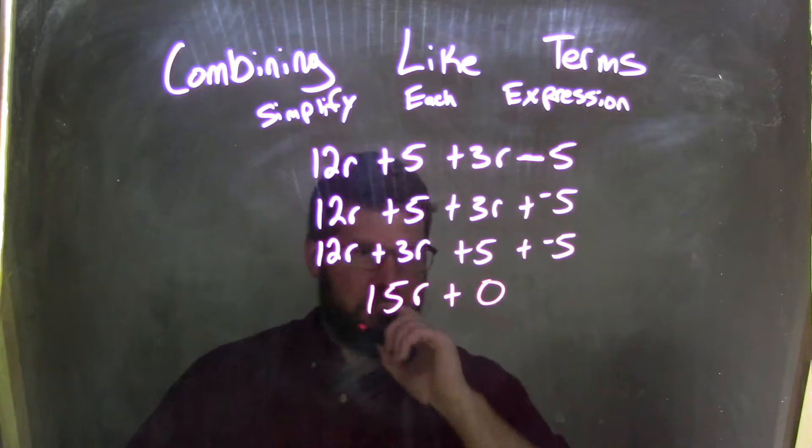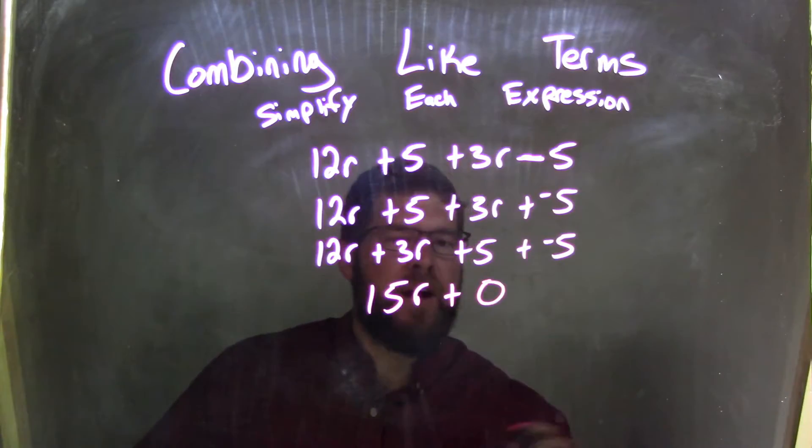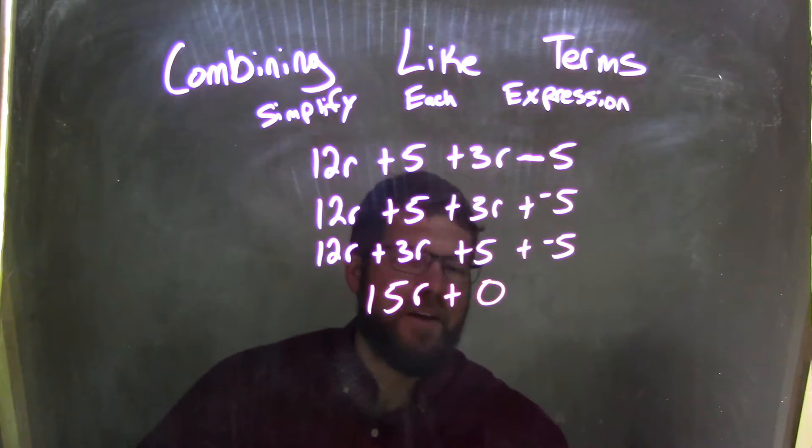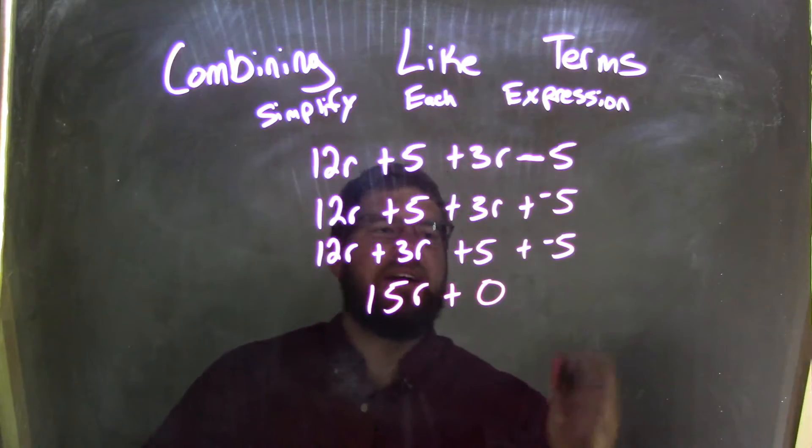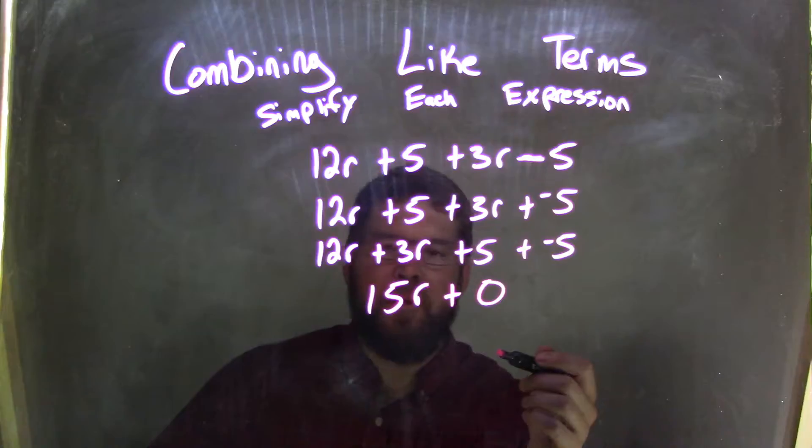5 plus negative 5 is just 0, right? They cancel each other out. If you need to see that it's 5 minus 5 equals 0, that's fine. But I think we can do 5 plus negative 5 and know that's going to be 0 without subtracting it.